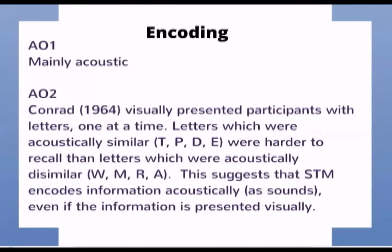Encoding in short-term memory is thought to be mainly acoustic. To demonstrate this, Conrad visually presented participants with letters one at a time. Letters which were acoustically similar, such as D, P, T, or E, were harder to recall than letters which were acoustically dissimilar, such as W, M, R, and A. This suggests that short-term memory encodes information acoustically — as sounds — even if the information is initially presented visually.